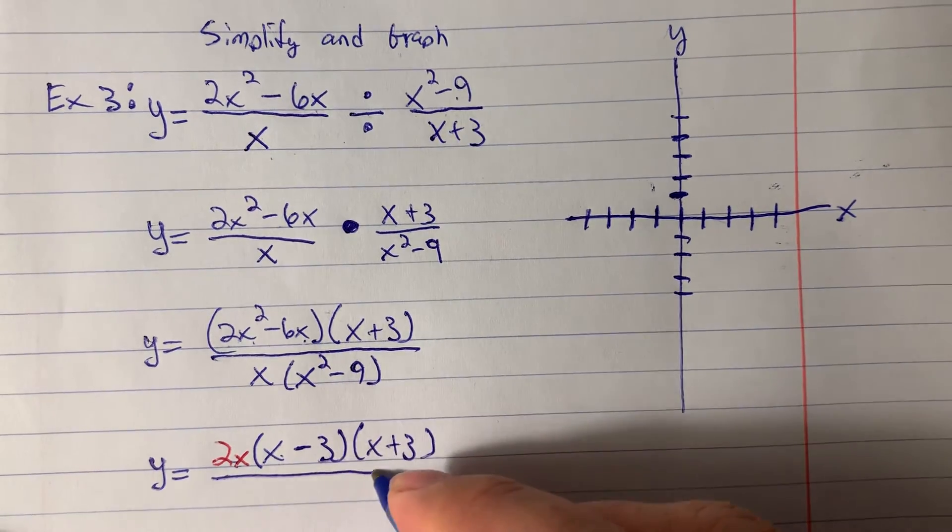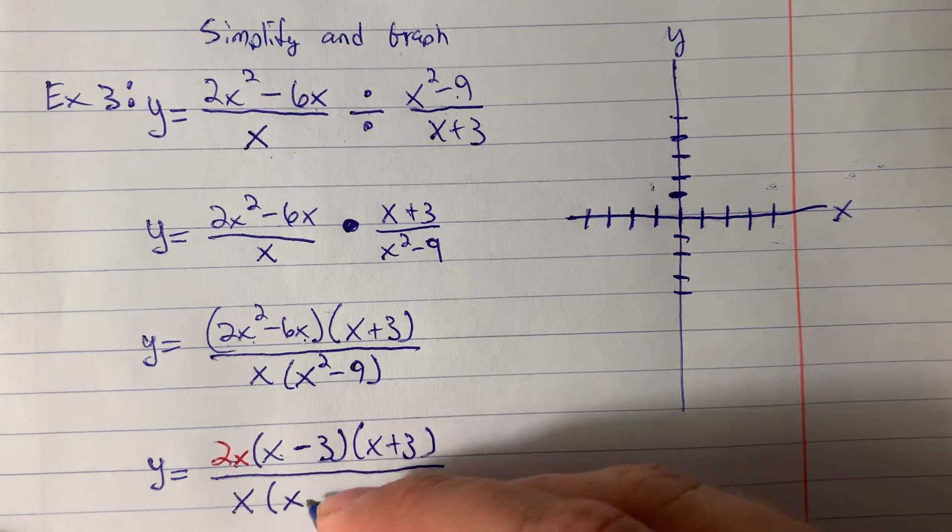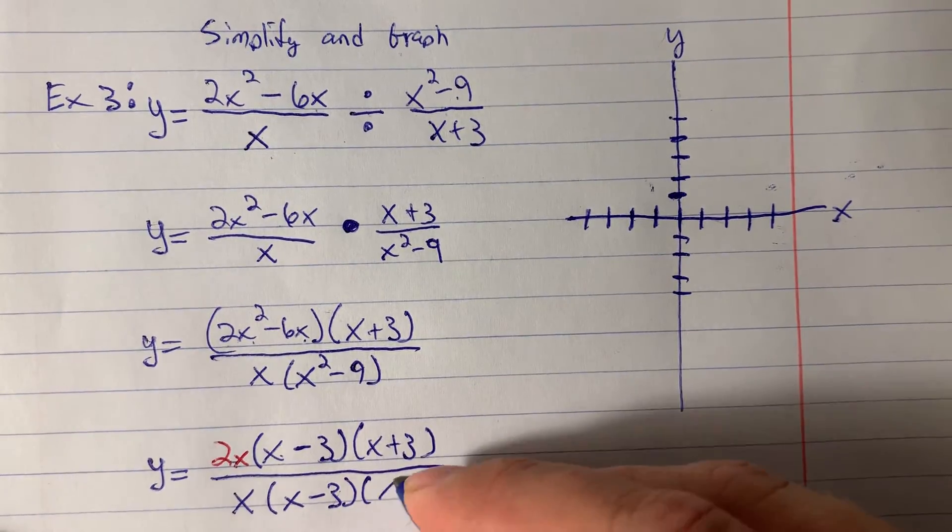In the denominator, x cannot be factored, but x squared minus 9 can be. It's a difference of 2 squares. It's x minus 3 times x plus 3.